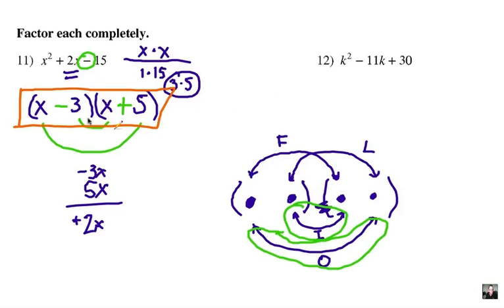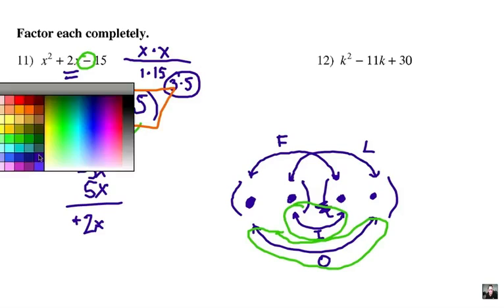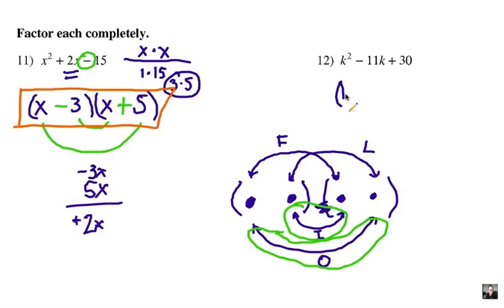This one right here is k squared. So we know we have to have a k and a k. Notice how it's a positive third term right there. So that means either these both are negatives or these both are positives inside these binomials. It's a negative middle term. So there's your clue. You're going to have to have both as negative. So what factors of 30 multiply to give you negative 11 when we add them together? Well, I already can think of a negative 6 times a negative 5. So let's try that.